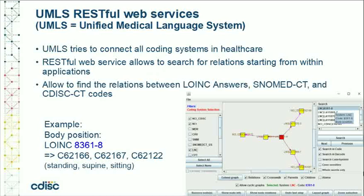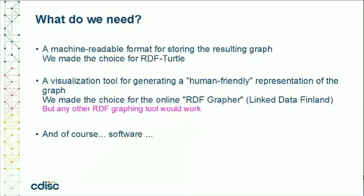UMLS — the Unified Medical Language System — tries to connect all coding systems used in the medical world, including CDISC-CT. It has a RESTful web service available, allowing us to use it in any modern software. It is barely known within the clinical research community, and that is really a shame, as it can be extremely well used when dealing with real-world data within clinical research. We decided to store our results as graphs using RDF-Turtle, though this may change in future.